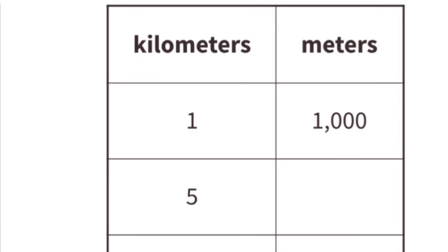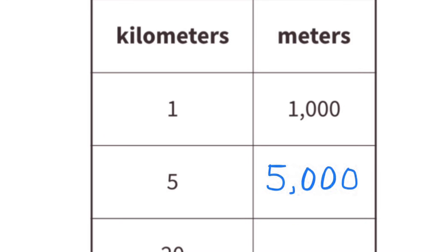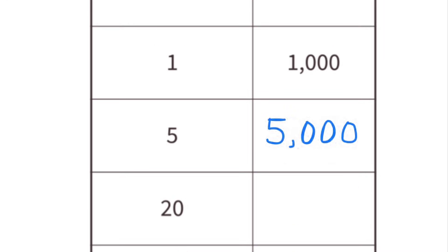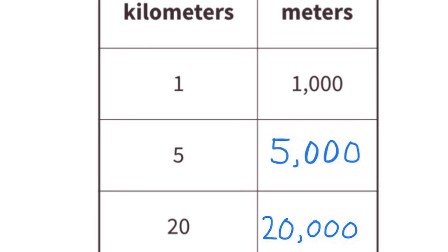On this table, 1 kilometer represents 1,000 meters. So for every 5 kilometers, I would have 5 times 1,000 meters. 1 kilometer equals 1,000 meters, and 5 kilometers equal 5,000 meters. For every 20 kilometers, how many meters would you have? 1 times 20 is 20, and 1,000 times 20 is 20,000. So for every 20 kilometers, you'd have 20,000 meters.